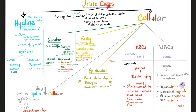Now to today's topic — urine casts. They are hyaline, made of proteins, or cellular. Cellular casts can be red blood cells, white blood cells, epithelial cells, waxy (which can be hyaline or cellular), fatty (because when cells die, lipid bilayer membranes disintegrate releasing fat), or granular (when cells disintegrate into granules within a WBC or epithelial cast). These types can overlap — it's not cut and dry.